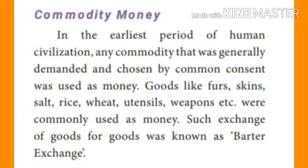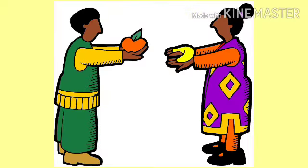Commodity Money: In the earliest period of human civilization, any commodity that was generally demanded and chosen by common consent was used as money. Goods like furs, skins, salt, rice, wheat, utensils, weapons etc. were commonly used as money. Such exchange of goods for goods was known as barter exchange.